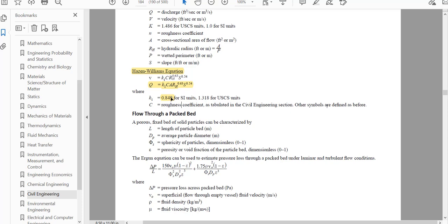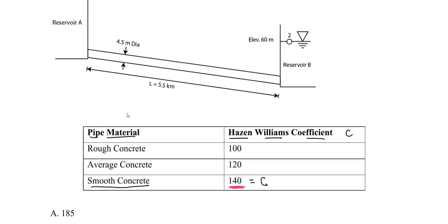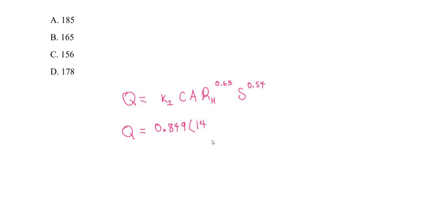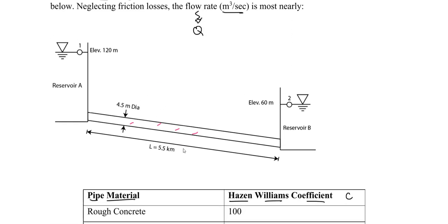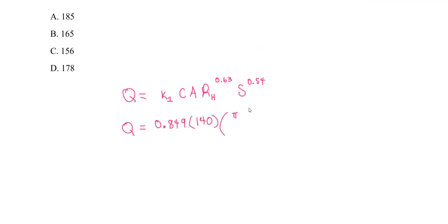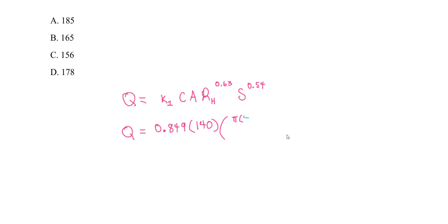We're working in SI units, so K₁ equals 0.849. Don't get that confused with the USCS or English units value. We plug in 0.849, our C value of 140 for smooth concrete. The area is for a circular pipe: pi times d squared over 4. The diameter is 4.5 meters, so we compute pi times 4.5 squared over 4.